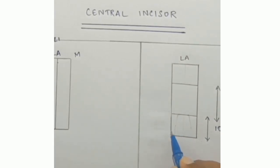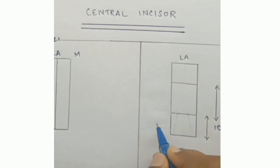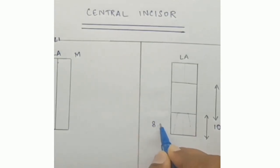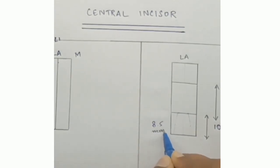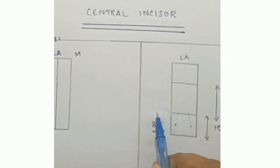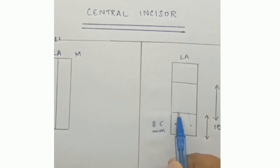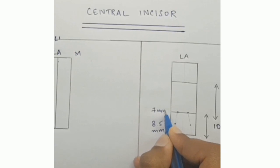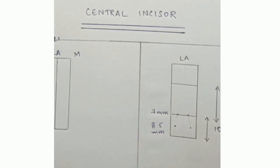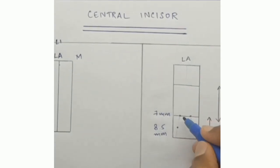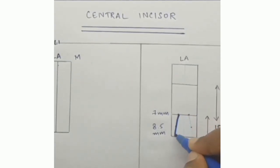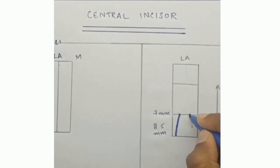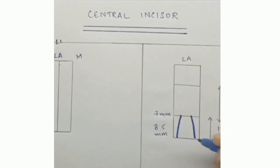Now we'll mark the mesiodistal dimension at the middle third of the crown, that is 8.5 mm, and the mesiodistal dimension of the crown at the cervix is 7 mm. Now join both the points and make a labial outline of the crown.